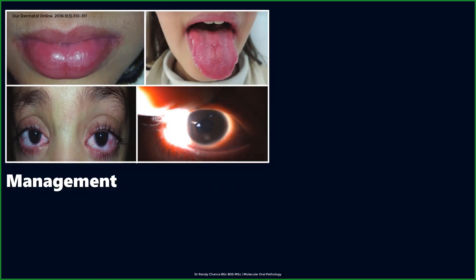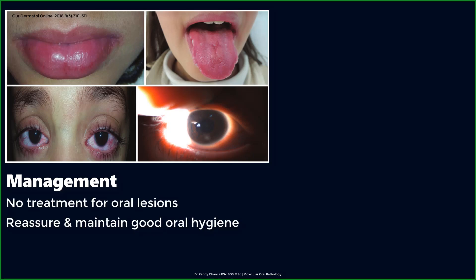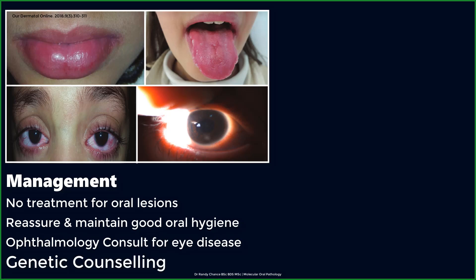What about treatment of Witkop's disease? As of now, there is no definitive treatment. The oral lesions, which are mostly asymptomatic, do not require any intervention. Ocular involvement will require an ophthalmology consult where the lesions may be excised, but recurrence is the norm. Ocular lubricants and artificial tears may help to alleviate symptoms. Corneal keratoplasty may be done when the plaques begin to encroach on the cornea. Finally, as with all inheritable disorders, genetic counseling forms a crucial part of the management.